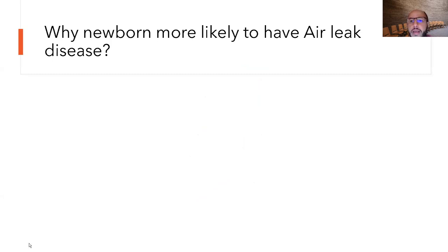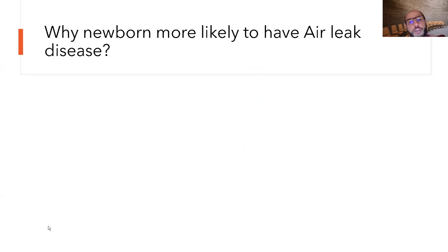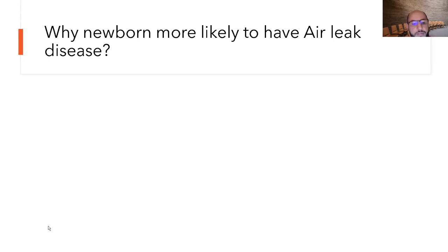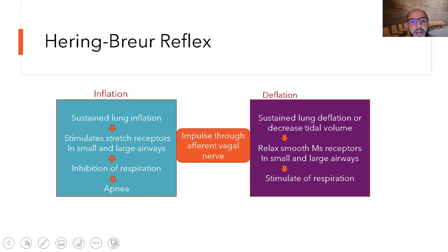Why are newborns more likely to have air leak disease? Why does pneumothorax, one of the most common air leaks, happen commonly shortly after birth? To explain this, we need to understand the Hering-Breuer reflex, also called the inflation-deflation reflex.